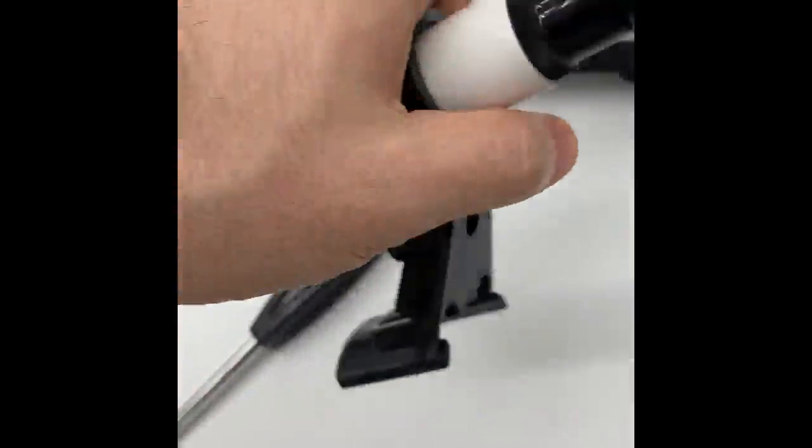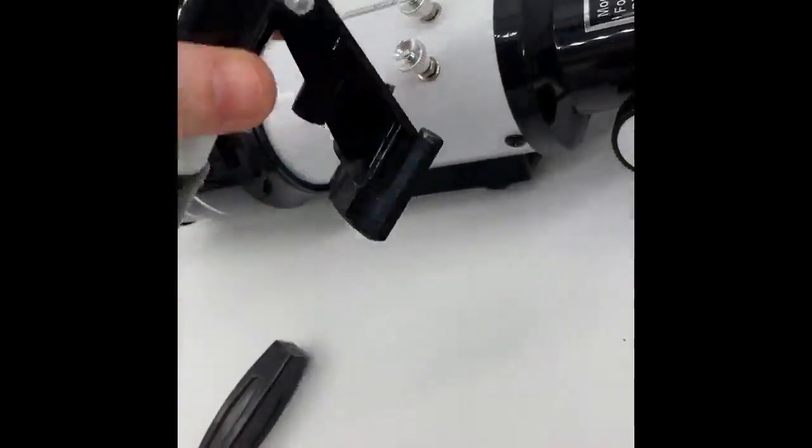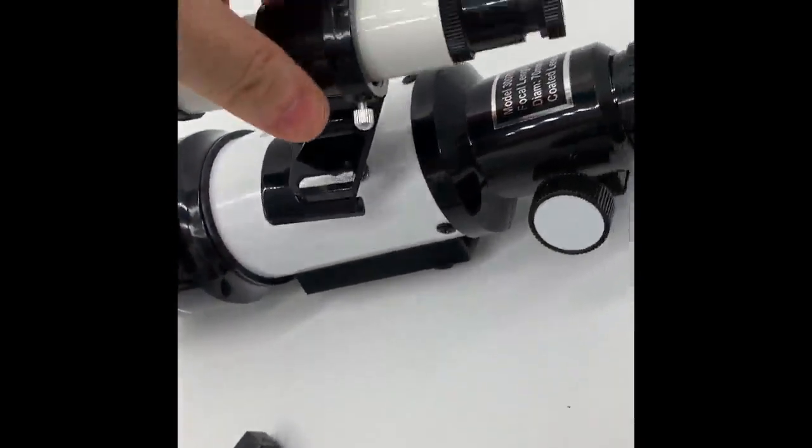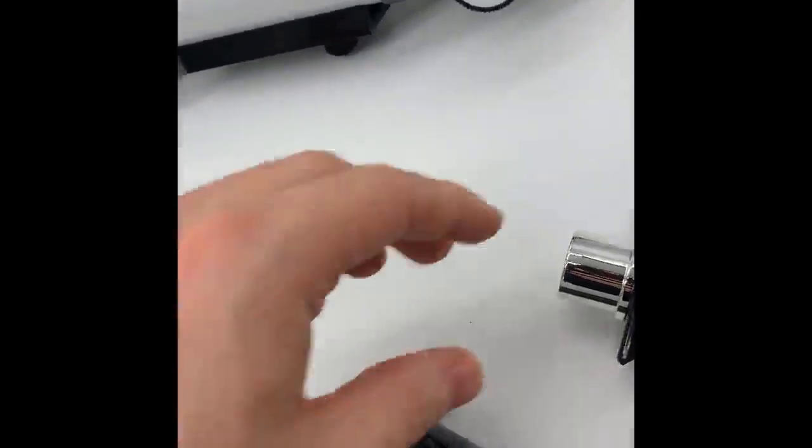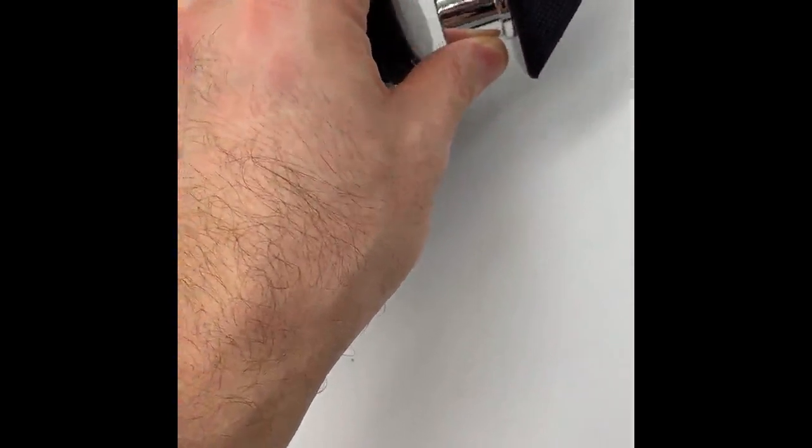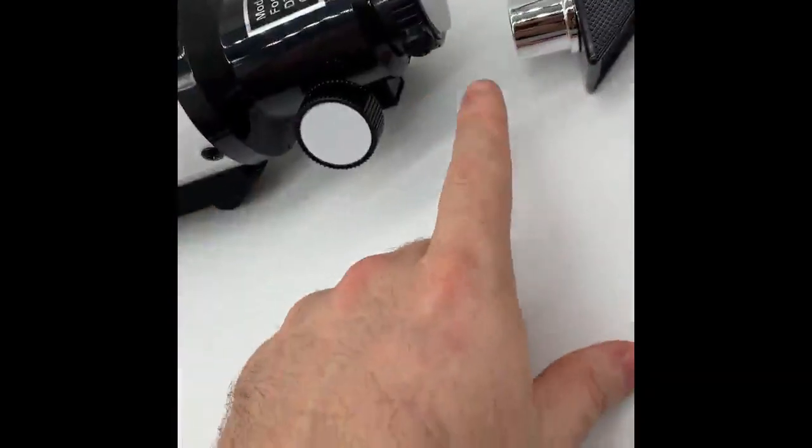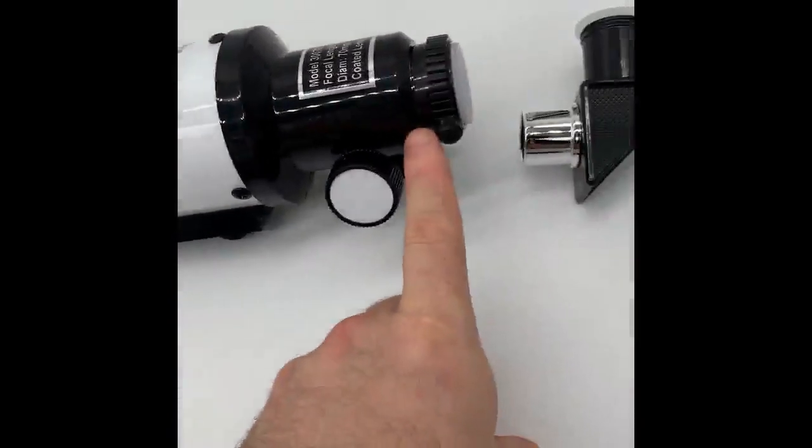Alright, so here is our telescope. You'll see right here it's got two external screws. Those are for our finder scope, which is right here. Now to attach the lens, we're going to take off our cover, put the metal part into the main part of the telescope.